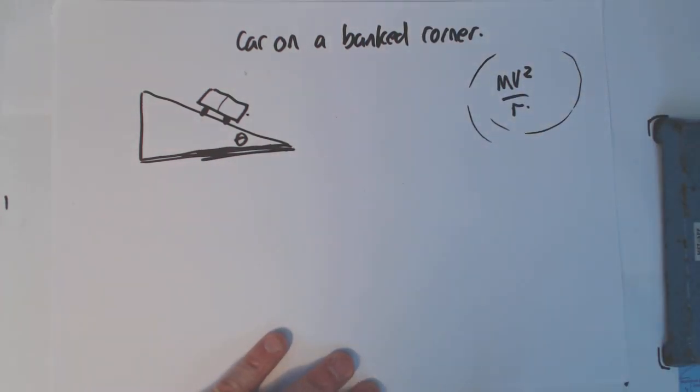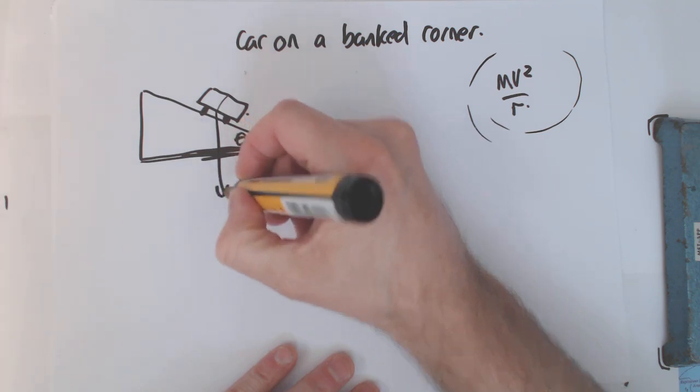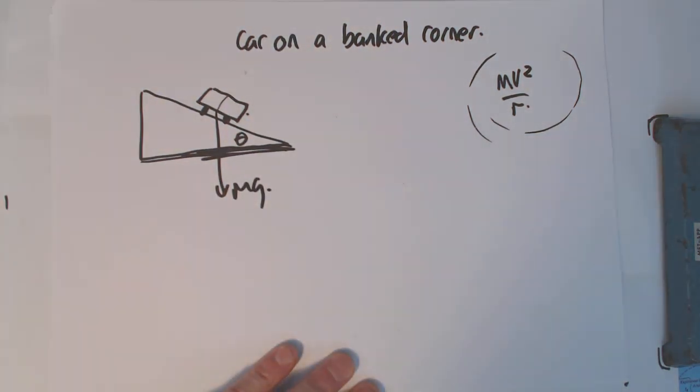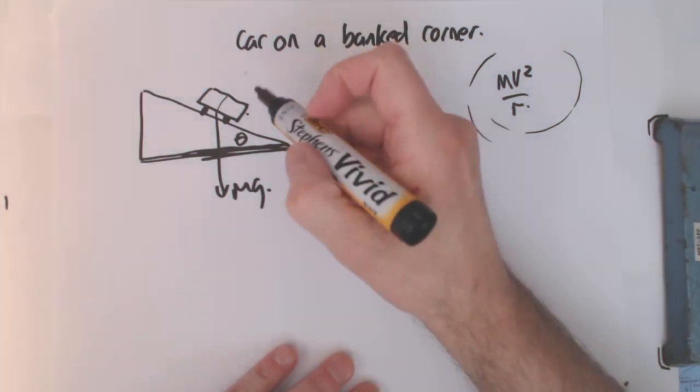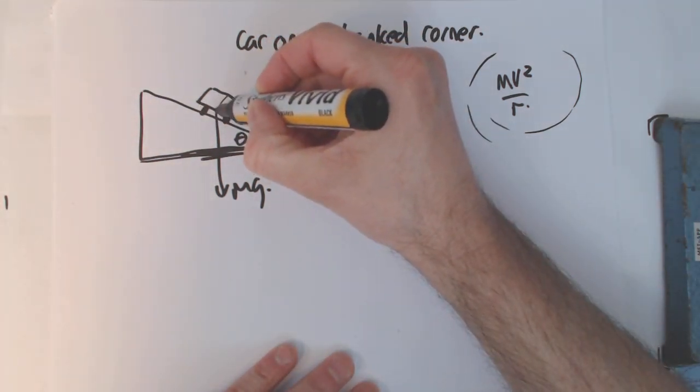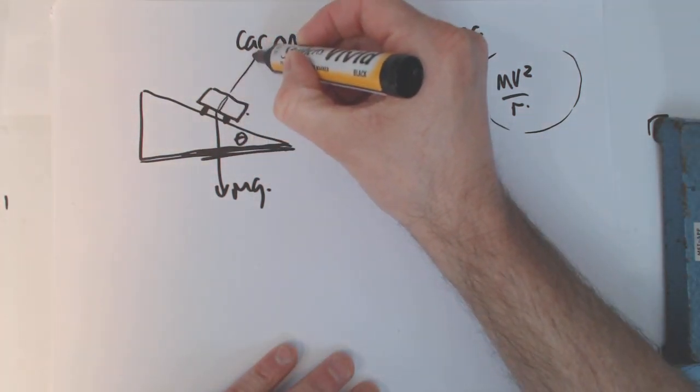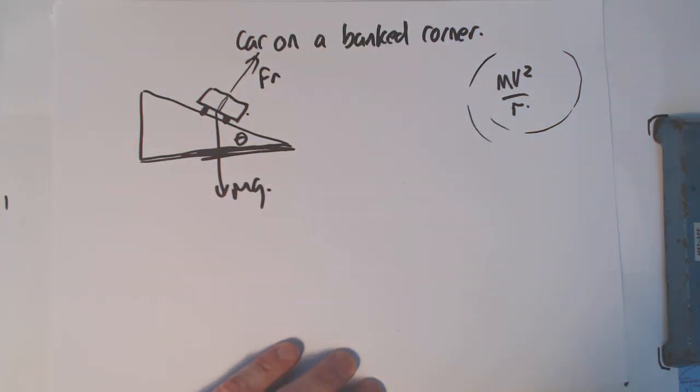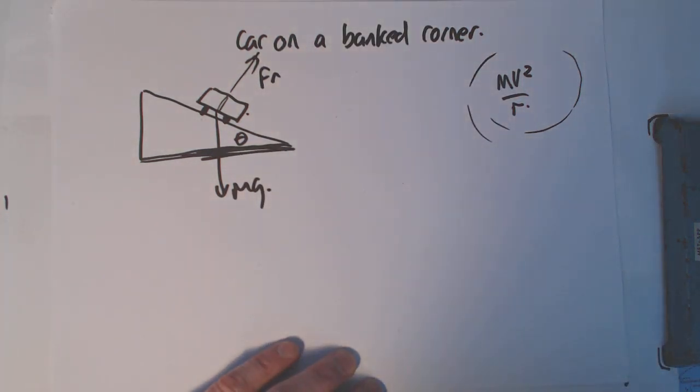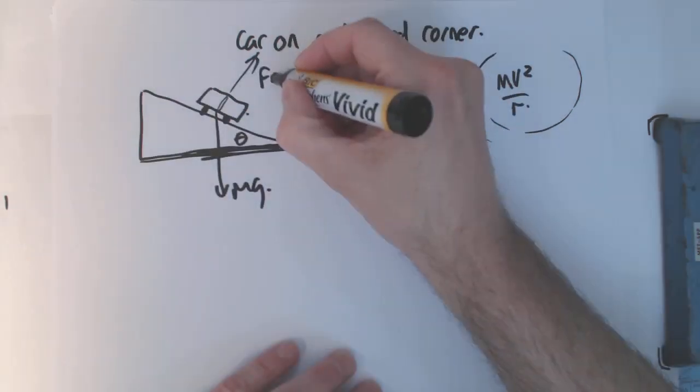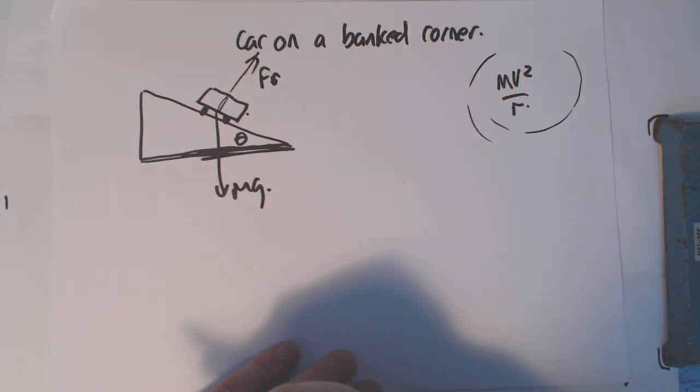As usual, the only forces we've really got here are mg for the car. What other forces are there? Well, there's the reaction force of the ramp pushing perpendicular to the ramp. So that would be the reaction force from the ramp, or support force if you want to call it that. We'll call it support force Fs. So Fs from the ramp and mg are the only forces.